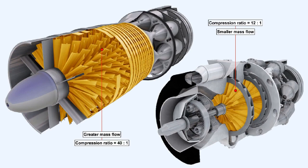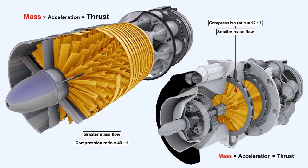And secondly, that much higher compression ratios can be attained in the axial flow compressor. Since the amount of thrust generated by a gas turbine engine depends partly upon the mass of air flowing through it, it can be demonstrated that when comparing two engines each having the same frontal cross-sectional area, the engine with an axial flow compressor will generate more thrust than the engine with a centrifugal flow compressor.